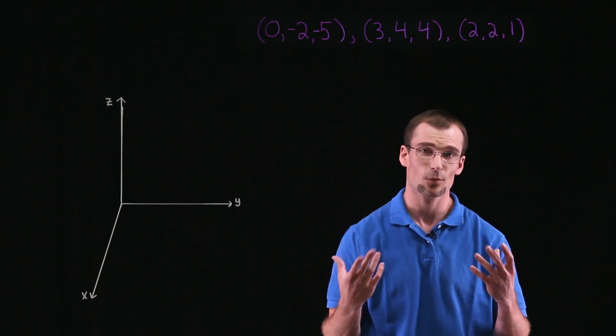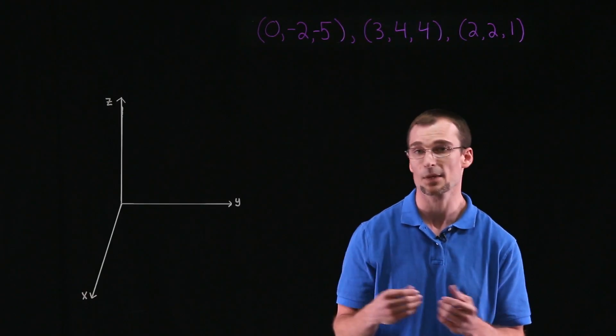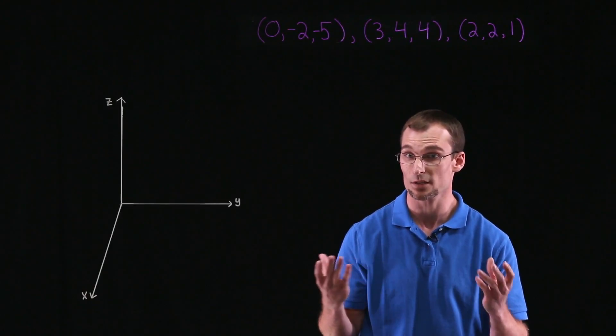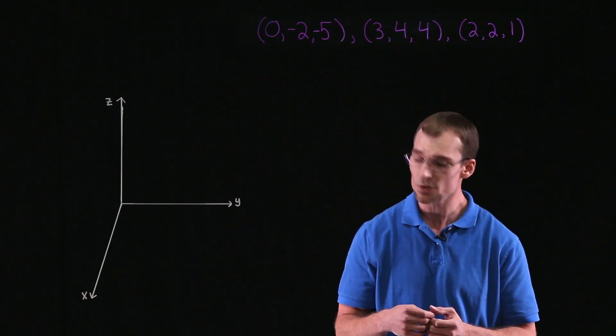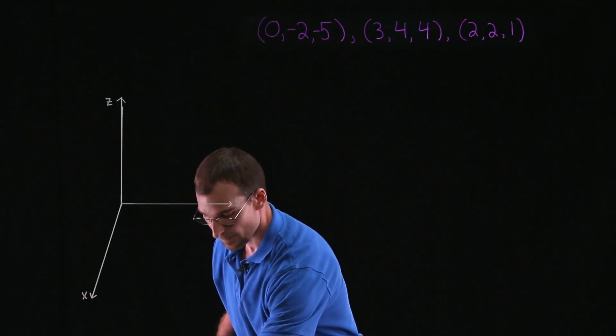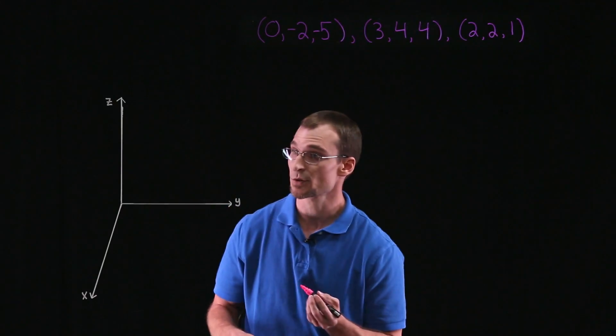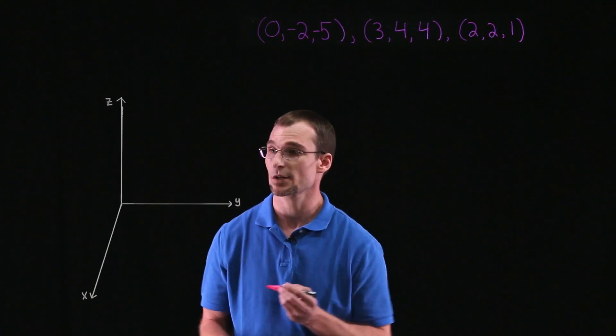So first, let's just remember, what does it mean for points to be collinear? Well, as the name kind of implies, it means that all the points lie in the same line. So to develop this, and pictures are worth a thousand words, let's take a look at a graph.